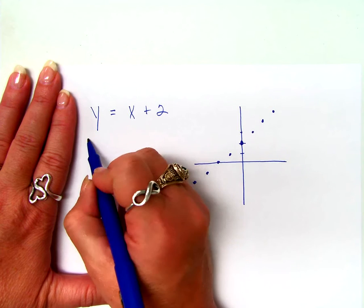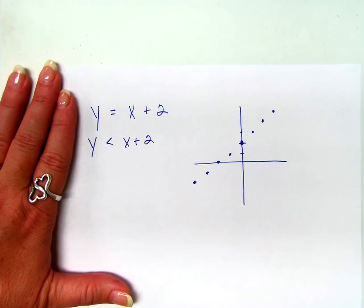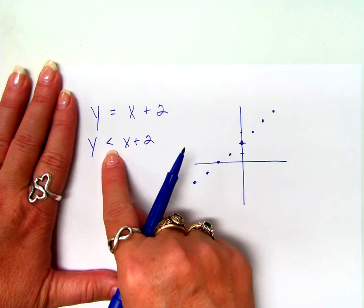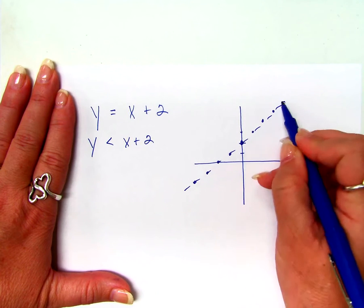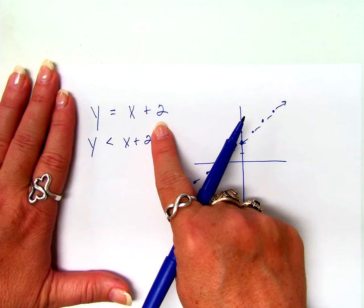How would it change if it was this? Well, it would be a dotted line. Why would it be a dotted line? Because it's not equal to. And so, first of all, it would be a dotted line. But we would graph it exactly the same way we graphed that, right?